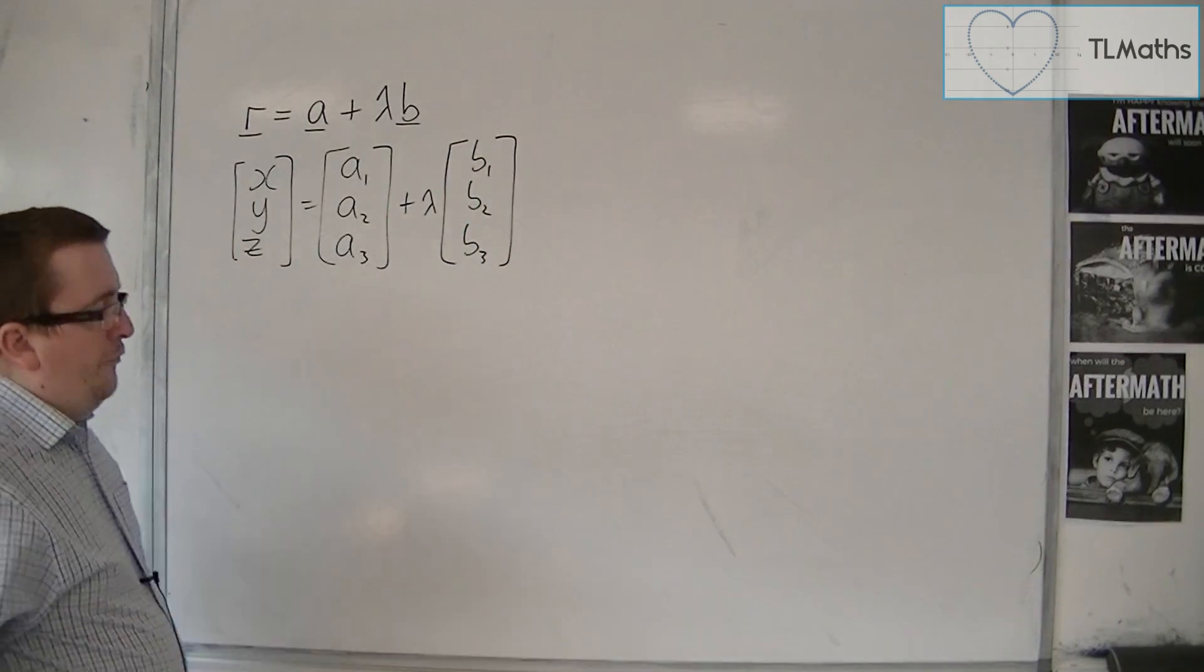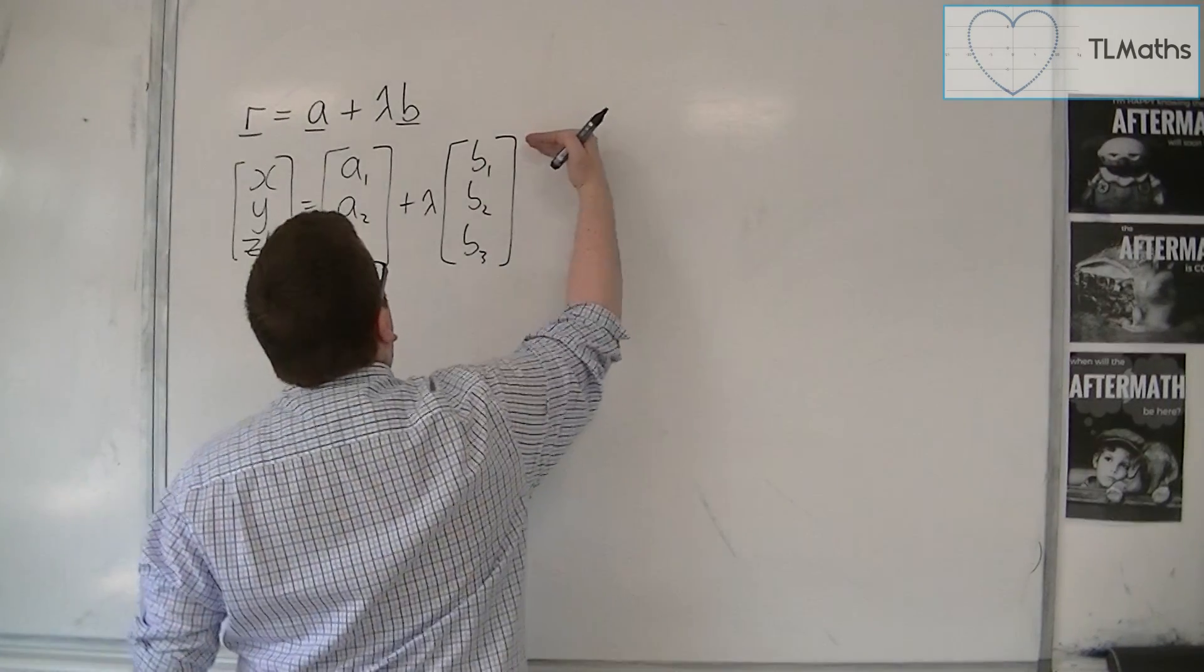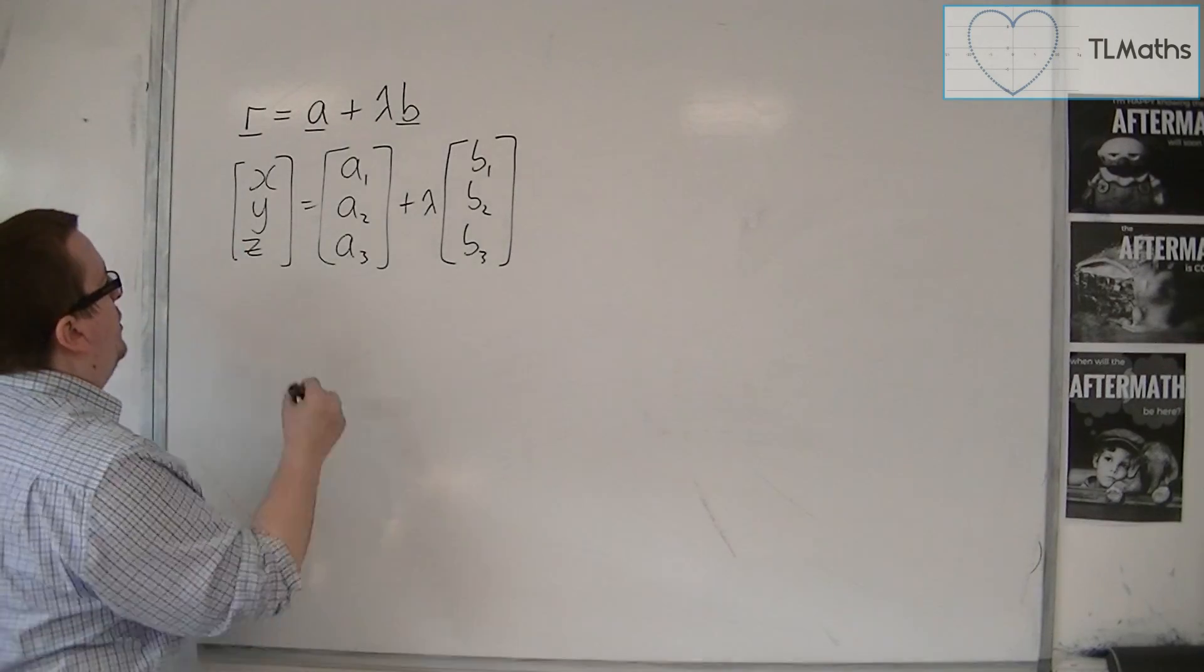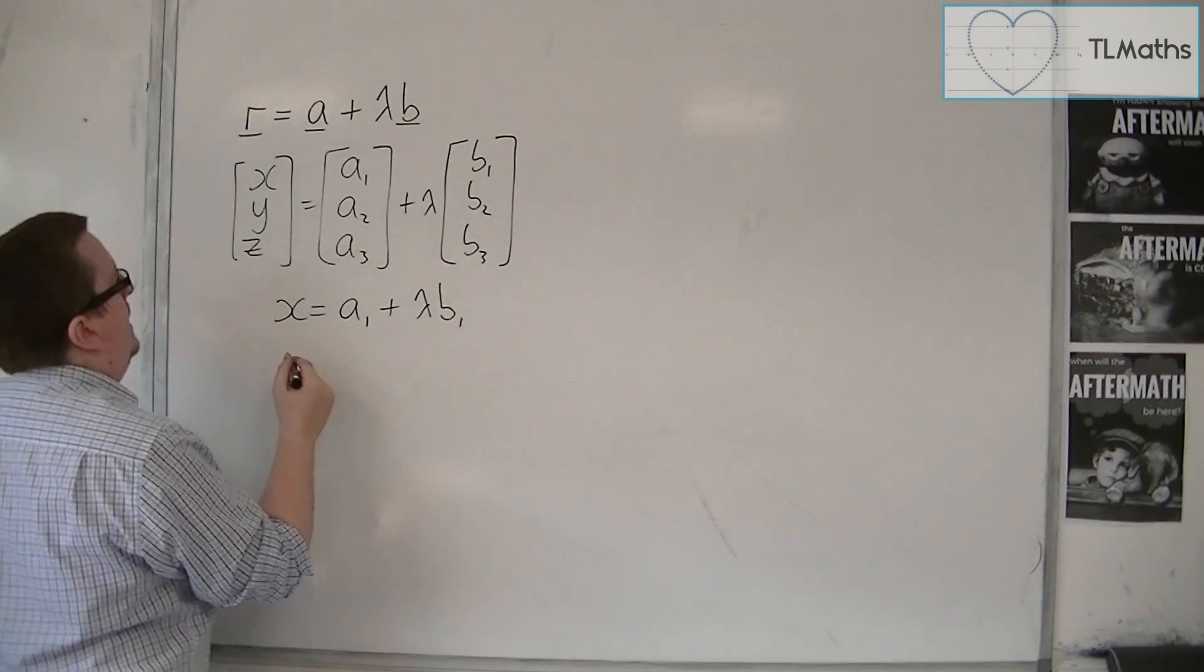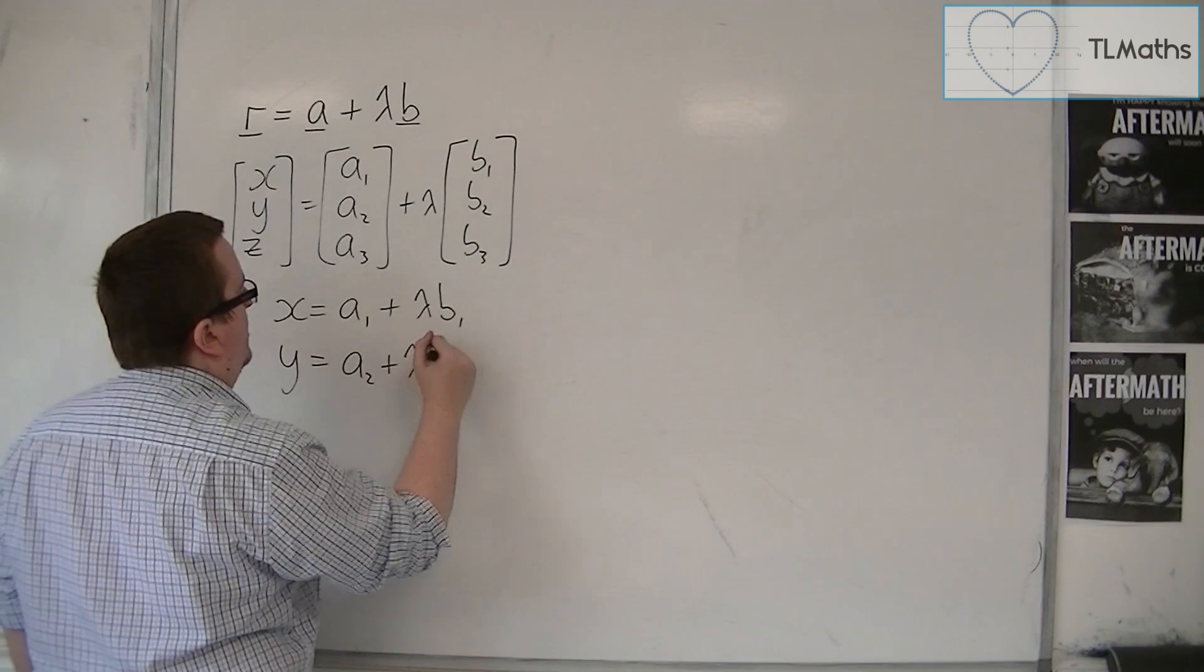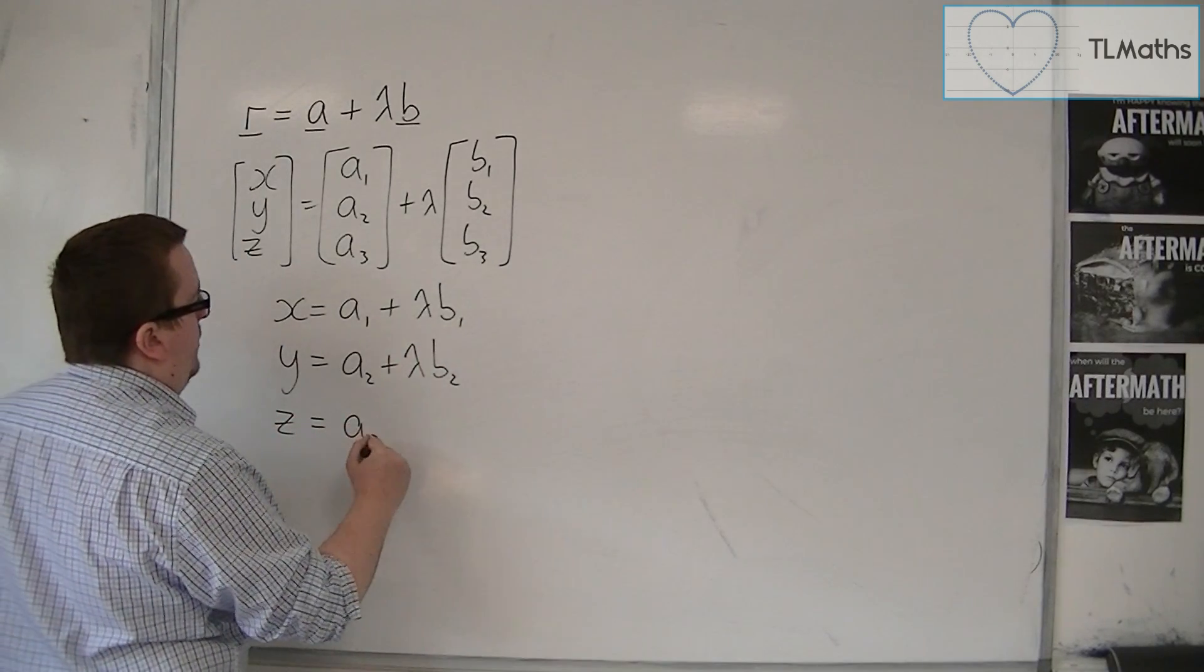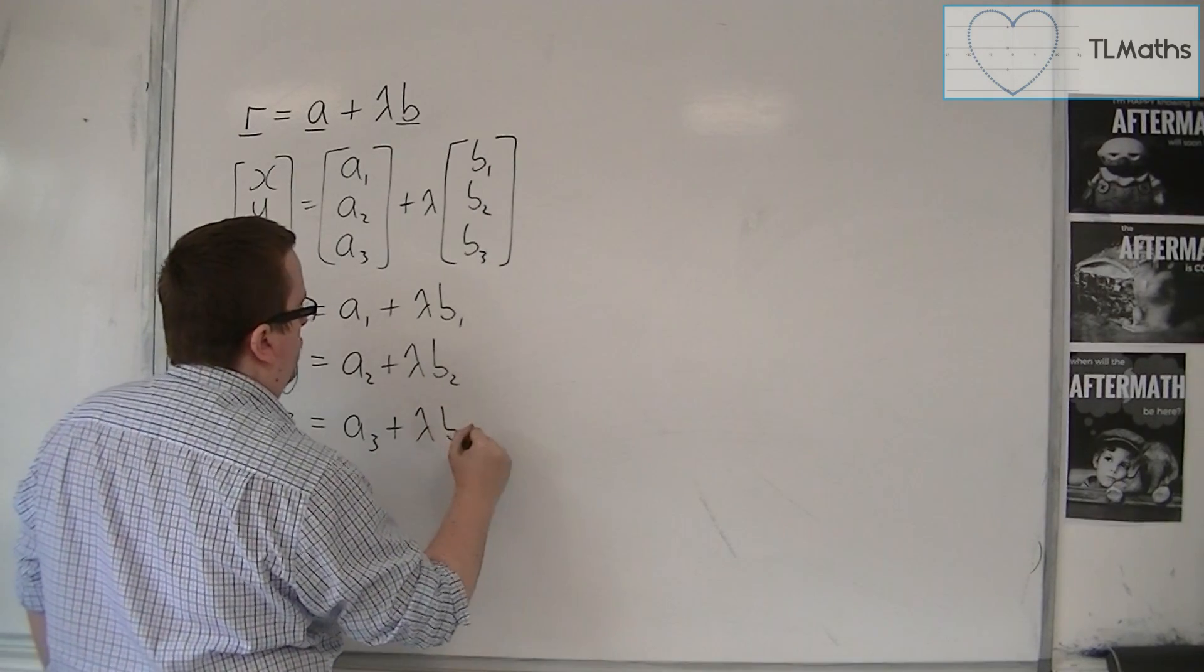So from that, you could then have a top, middle, and bottom equation. So you've got x equals a1 plus lambda b1, and you've got y equals a2 plus lambda b2, and z is equal to a3 plus lambda b3.